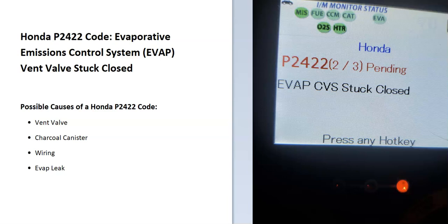Today I'm talking about a Honda with the P2422 code, what it is, and how you go about fixing it. The P2422 code is an Evaporative Emission Control System (EVAP) vent valve stuck closed.